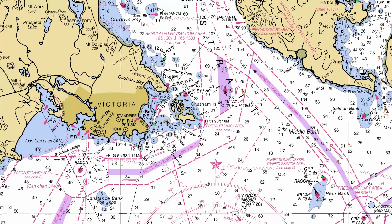That's really the easiest way to navigate these waters — make sure you're using the currents. Go with the current and you're doing seven knots; go against the current and you're doing three knots. It really makes a world of difference.